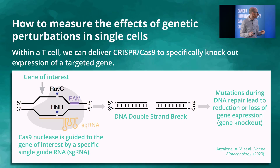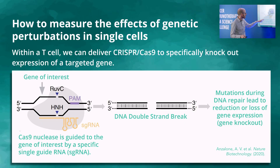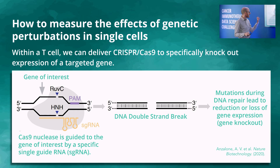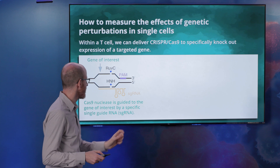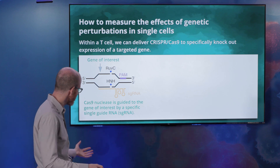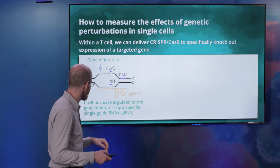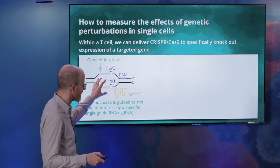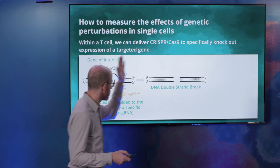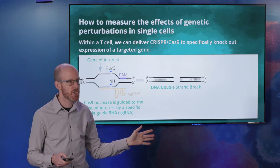How CRISPR-Cas9 works is we have this protein called the Cas9 nuclease, and this is guided to a specific sequence in your genome based on the sequence of a specific single guide RNA. This guide RNA can guide you to any given gene, such as TCF7 or PDCD1, and it brings along the Cas9 nuclease. When the Cas9 nuclease binds that specific site, it leads to a double-strand break in the genome.